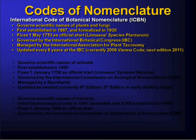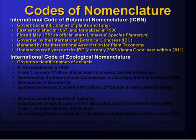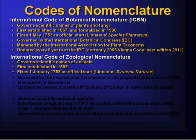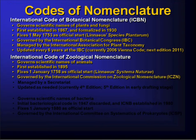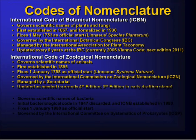The next edition coincides with the IBC in 2011 and should take effect in 2012. There's also the International Code of Zoological Nomenclature, ICZN, which governs names for animals, first established in 1895. It fixes 1 January 1758 as the official start — the publication date for the 10th edition of Systema Naturae. It's governed by the Commission of Zoological Nomenclature; note that the C in ICZN stands for commission, whereas in the botanical code it stands for code. It's managed by a secretariat housed at the Natural History Museum in London, currently in its fourth edition, which took effect January 1, 2000.